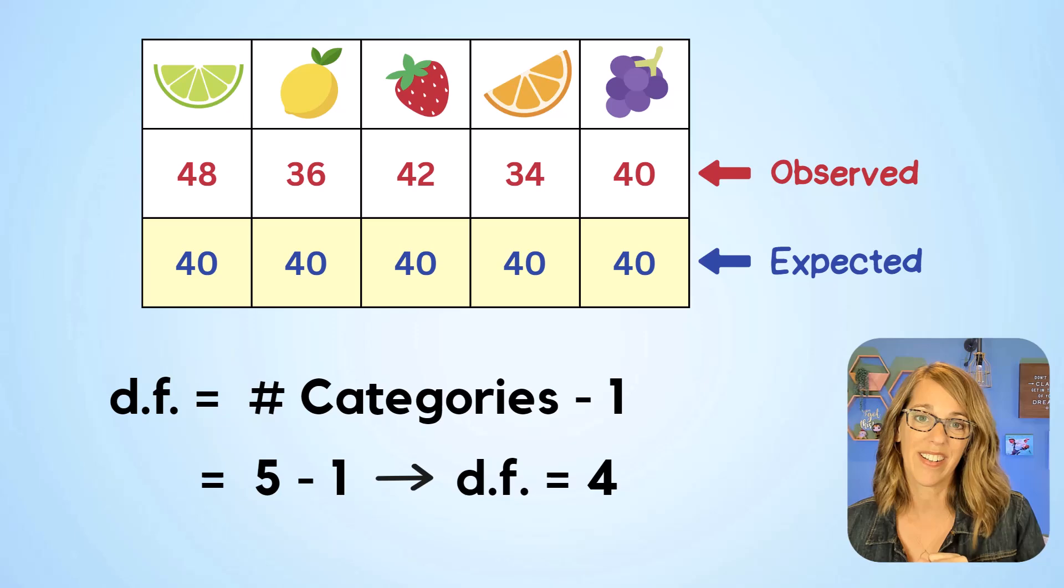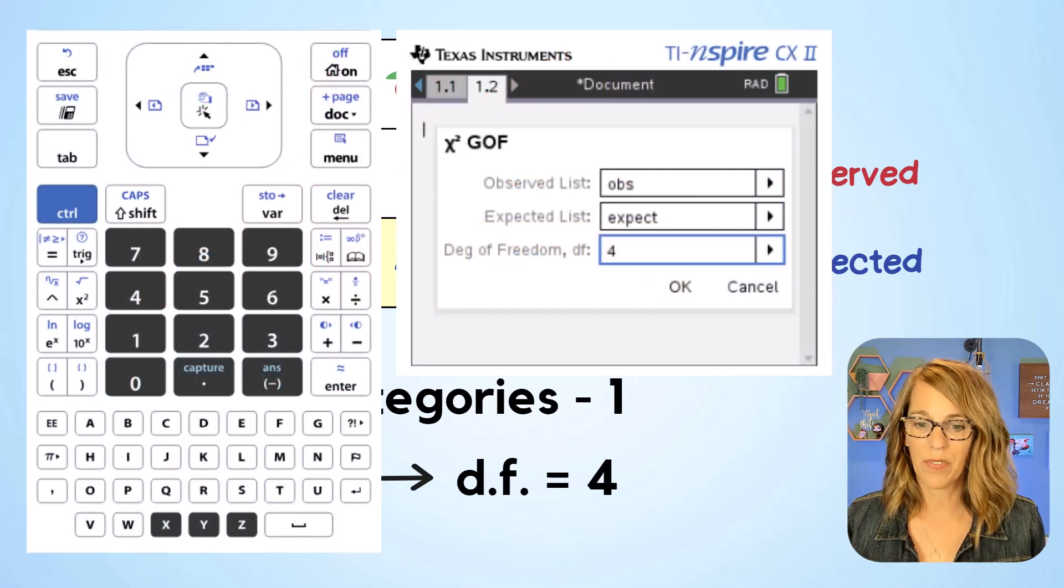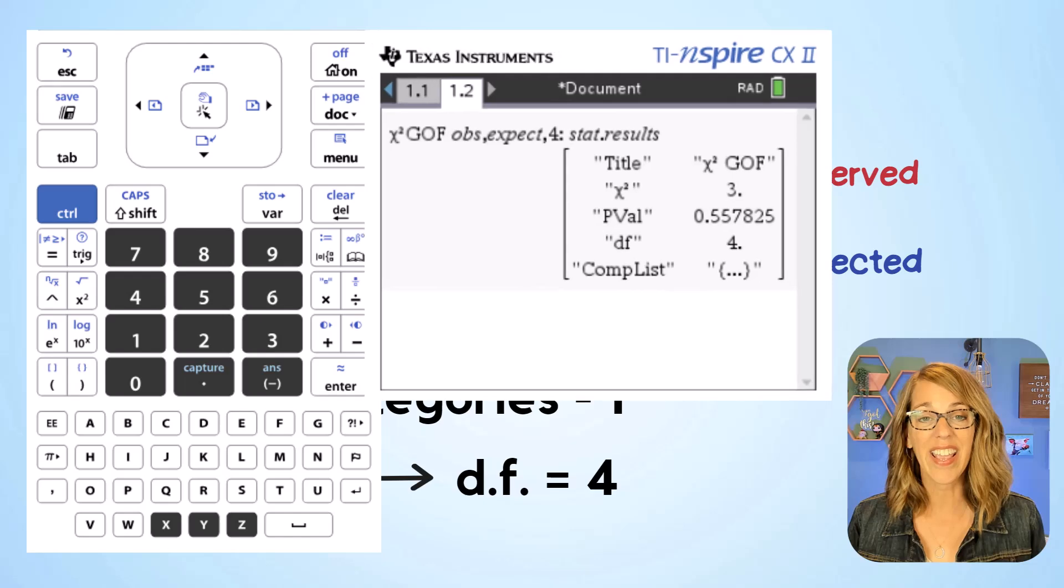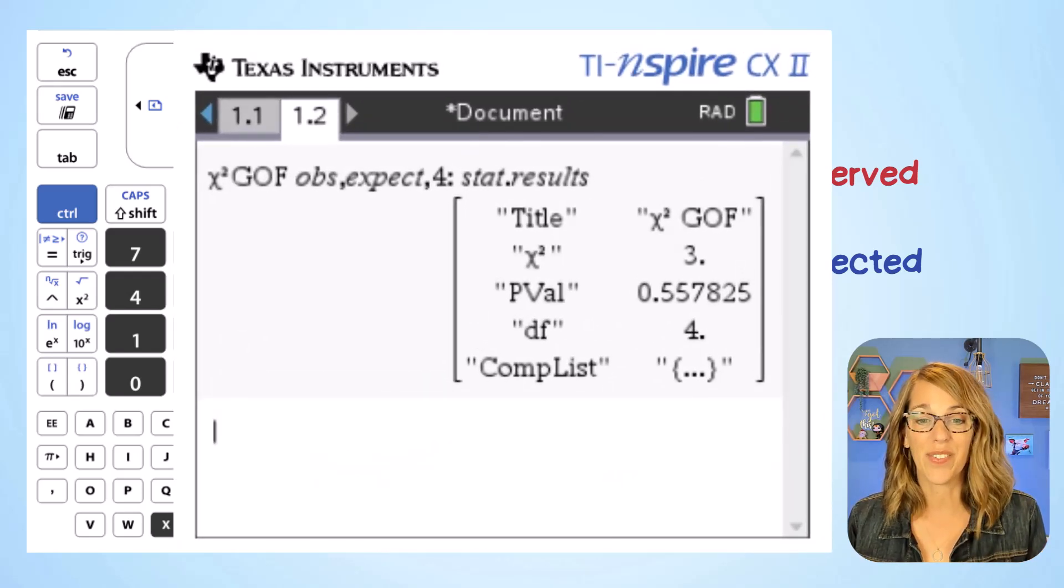Let's go back to that calculator. So typing in four for our degrees of freedom and then enter, I can go ahead and hit enter again for okay, and it's run the values for us.